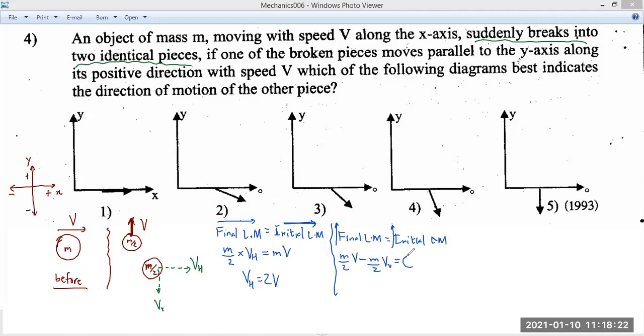And initially, there is no vertical component. Therefore, initial linear momentum in that direction is 0, in that direction. Direction is important. It's obvious you can see Vv is equal to V because M by 2, M by 2 gets cancelled off. Therefore, Vv is equal to V and Vh is equal to 2v.